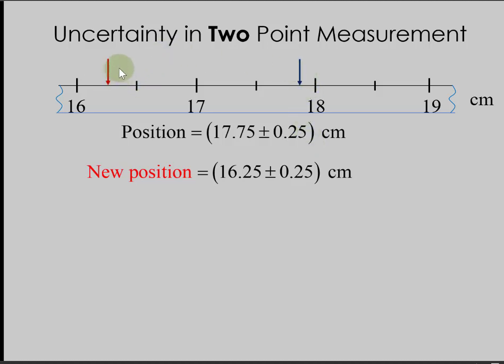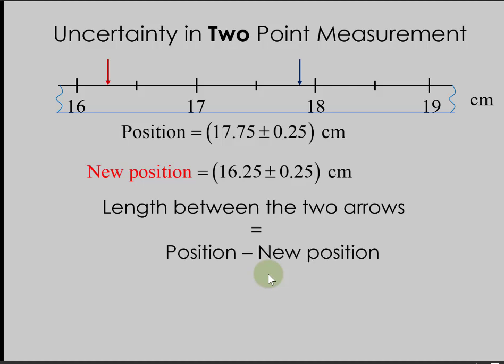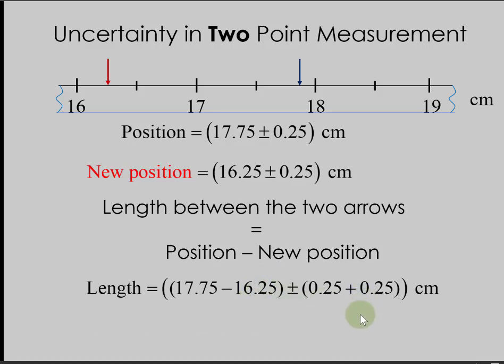Similarly, we can find the position of this red arrow, and the length between these two arrows is just the difference between these two positions, plus-minus the uncertainty. We'll talk more about adding, subtracting, dividing, and multiplying uncertainties in the next video.